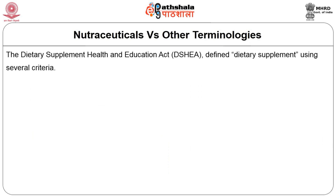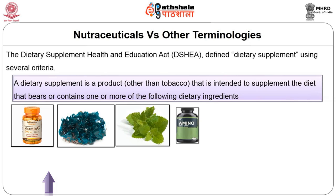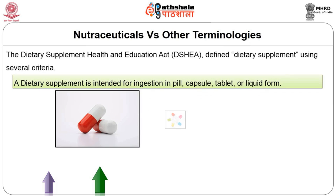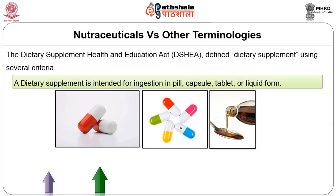To neutralize free radicals, antioxidants — which are strong reducing agents — provide electrons and stop the chain reaction, making the free radical stable so that cell damage does not occur. Regarding dietary supplements, the Dietary Supplement Health and Education Act defined a dietary supplement using several criteria: it is a product other than tobacco intended to supplement the diet; it bears or contains one or more dietary ingredients such as a vitamin, mineral, herb or other botanical, an amino acid, or a dietary substance to supplement intake, or a concentrate, metabolite, constituent, extract or combination of these ingredients.